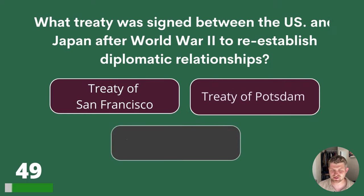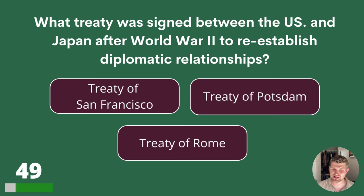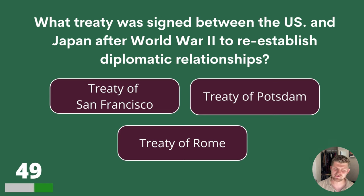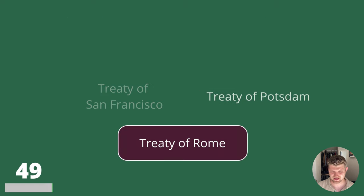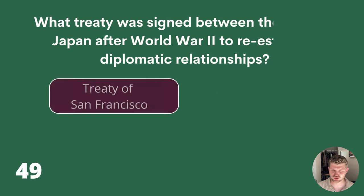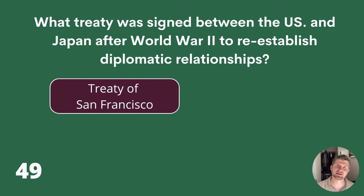Question 49. What treaty was signed between the US and Japan after World War II to re-establish diplomatic relationships? Treaty of San Francisco, Treaty of Potsdam or Treaty of Rome? The answer is the Treaty of San Francisco.